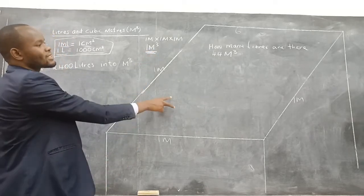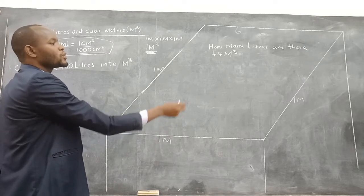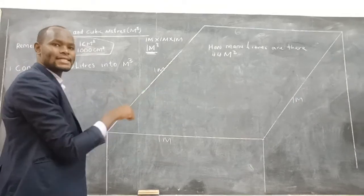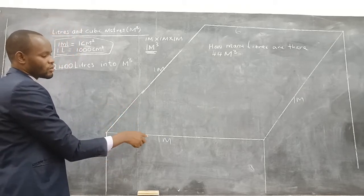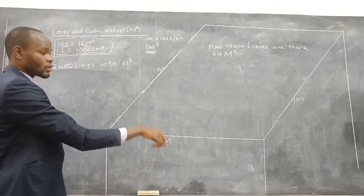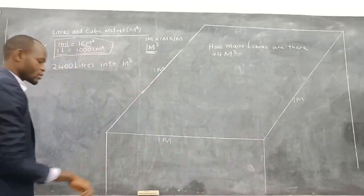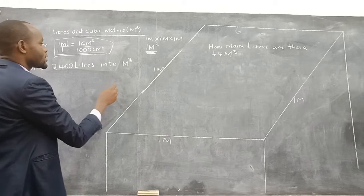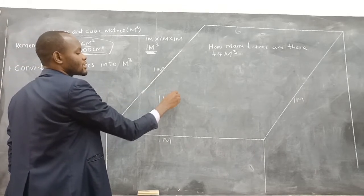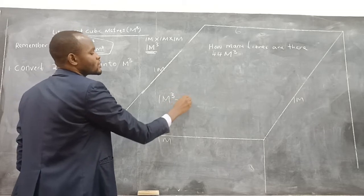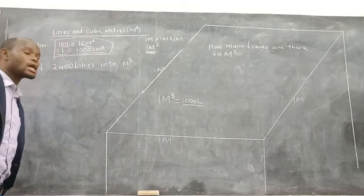You can see this one is a very big cube. If you have to fill this one with water, you need to put 1,000 liters in this cube. This is a very big cube — you can even see it is not fitting on the board. You are supposed to extend 1 more meter, and 1 meter there, and also 1 meter. So this is the comparison: 1 meter cubed is equivalent to 1,000 liters.